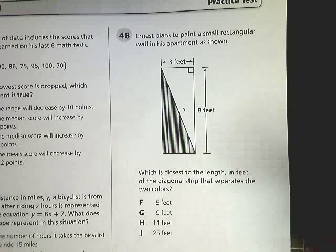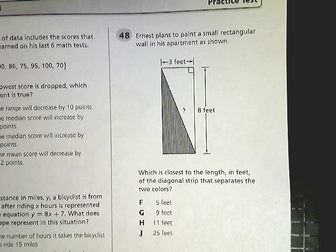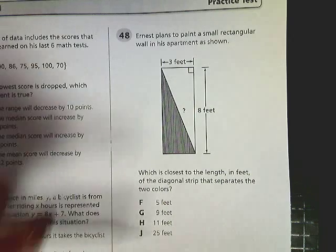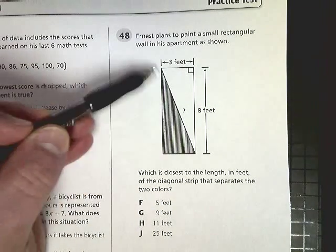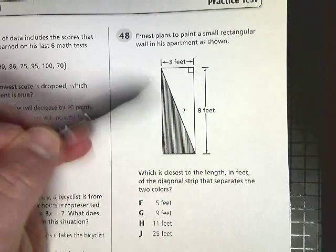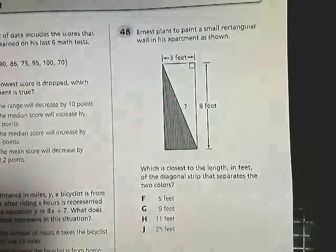So here's his wall. He's going to paint a nice diagonal apparently across it. What is closest to the length in feet of the diagonal strip that separates the two colors? I guess he wants to know—often times if you paint like this, you're going to put a little tape line there. He wants to know how long this tape is. Well, obviously,